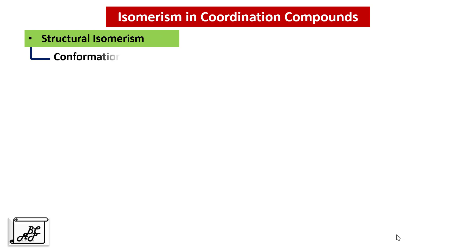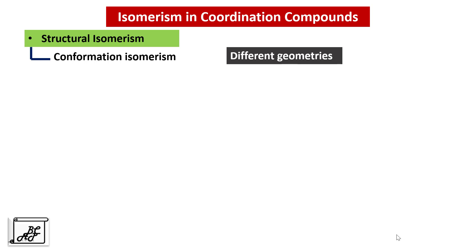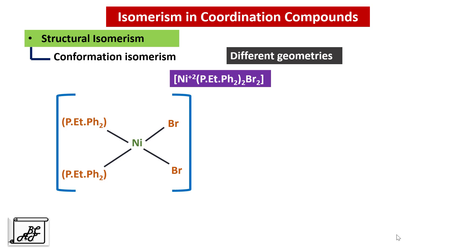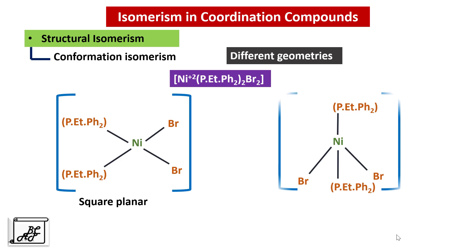Let's start with Conformational Isomerism. Whenever we study Conformational Isomerism, we have to look for different geometries. For example, in this complex, Nickel is the central metal atom. There are two Bromine atoms as ligands and two ligands of phosphorus ethyl diphenyl molecules. This complex can have two types of geometries: Square Planar geometry or Tetrahedral geometry.